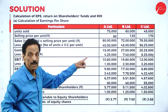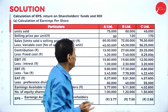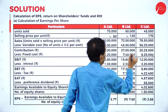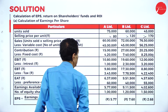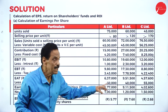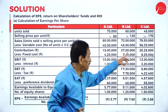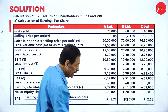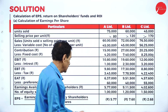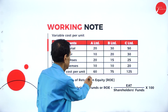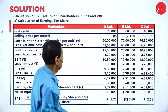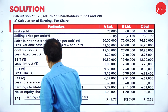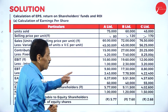Units sold 75,000 into rupees 80, 60,000 into 120, 45,000 into 170 — if we multiply, it comes to 60 lakh, 72 lakh, 76 lakh 50,000. Minus variable cost per unit: 60, 70, 125 — if we multiply: 45 lakh, 45 lakh, 56 lakh 25,000. If we deduct, that is the contribution.